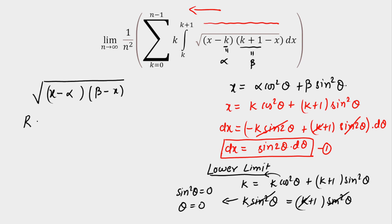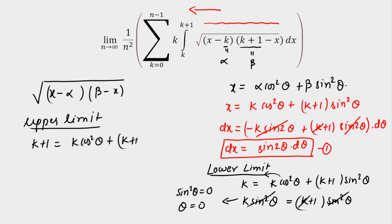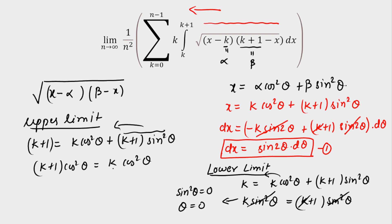For the upper limit: when x equals k+1, we have k+1 = k·cos²θ + (k+1)·sin²θ. Taking (k+1)·sin²θ to the other side gives (k+1)·cos²θ = k·cos²θ. Cancelling k·cos²θ from both sides leaves cos²θ = 0, which means cos θ = 0, so theta equals π/2. Thus lower limit is 0 and upper limit is π/2.